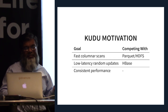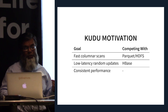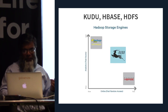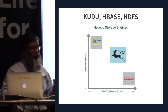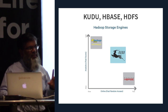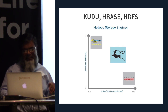Kudu has fast columnar scans, so it competes with Parquet, and it has low-latency random access, so it competes with HBase. It's not quite as good as either one, but it trades off between them so you end up with decent performance on both axes.